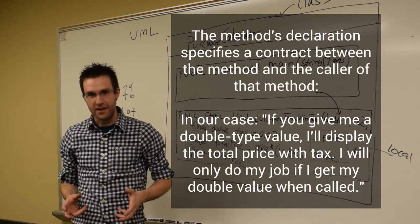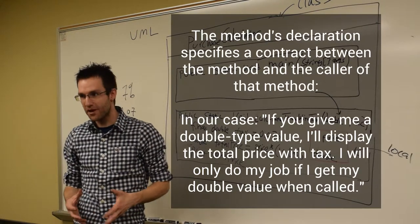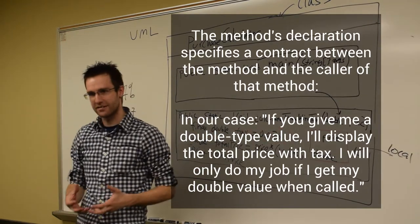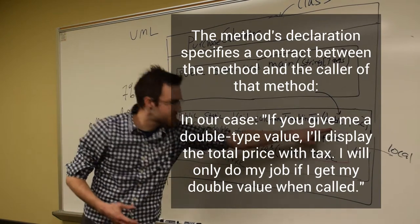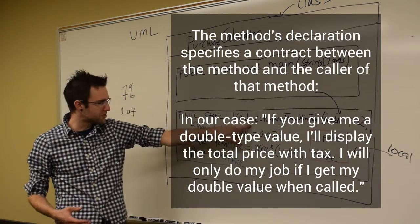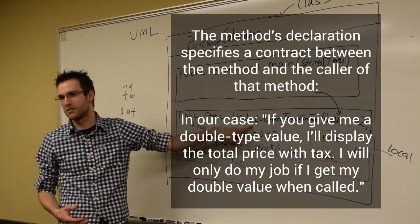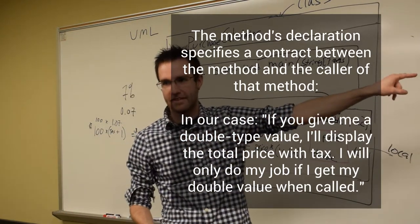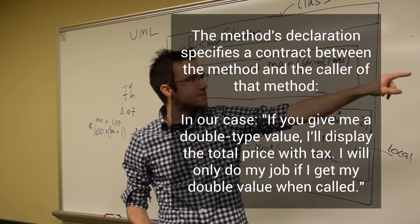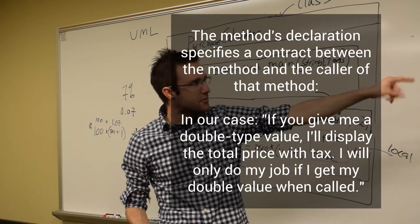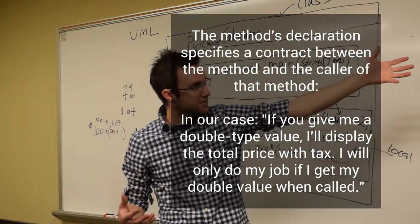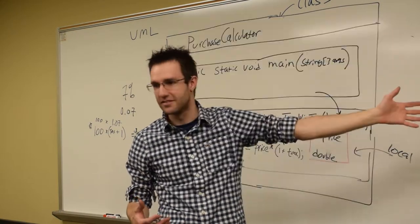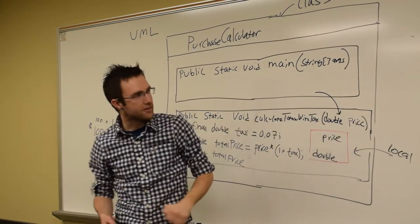And display price with tax requires an argument of type what? Double. I will not let you call this method without giving this method what it's specified. It's a contract. The method says, you must give me a double, and then I will do what you tell me, if the coder coded to specification. So, do we have a double to give it? Item price? Total price. Do we have a total price? Does anyone see a price up here? We will.